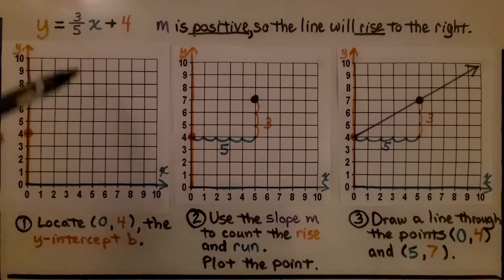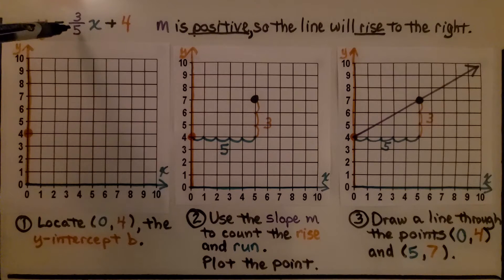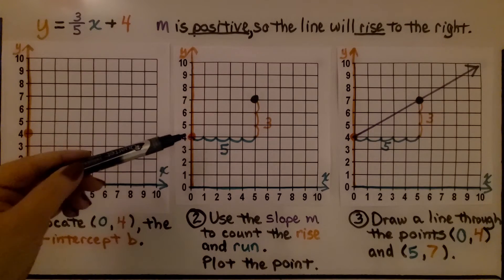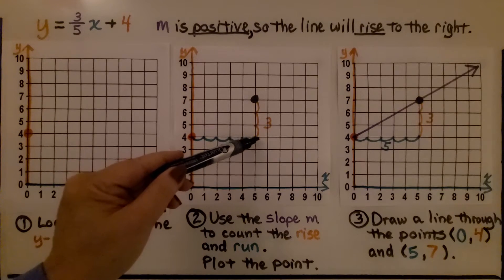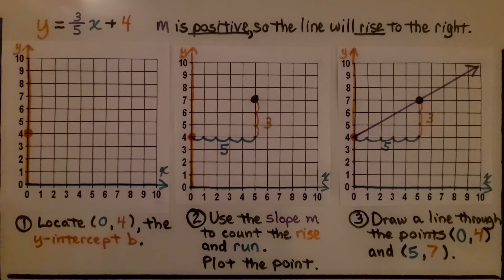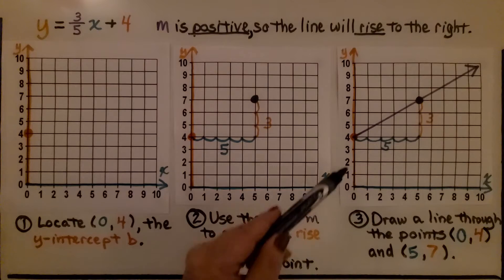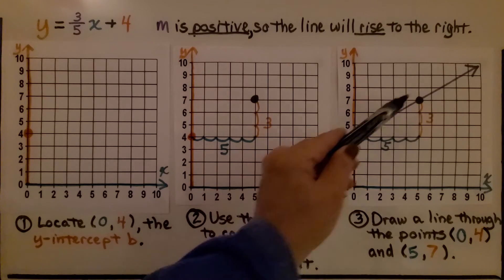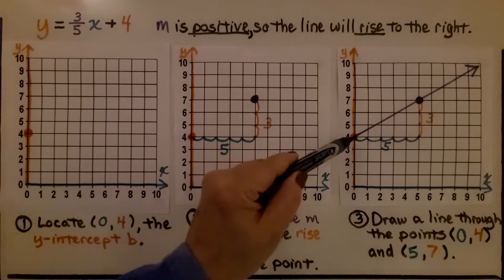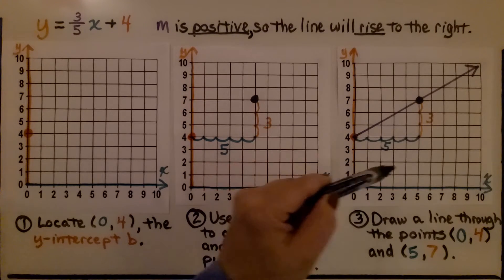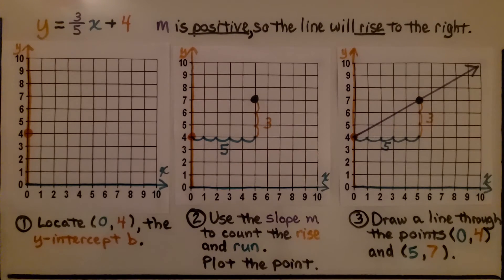Second thing we do is we use this slope — 3 for the rise, 5 for the run — to find our other point. We've got a run: 1, 2, 3, 4, 5, that brings us here, and 3 for rise: 1, 2, 3, that brings us here. Plot the point. Now we draw a line through the points and make it continue. That's going to be (0, 4) for the first ordered pair and (5, 7) for the second ordered pair.